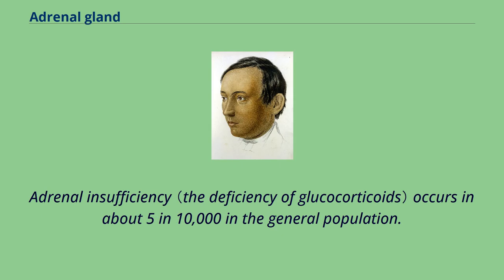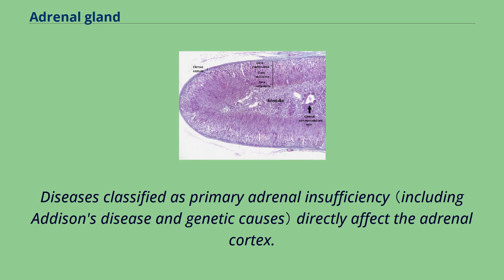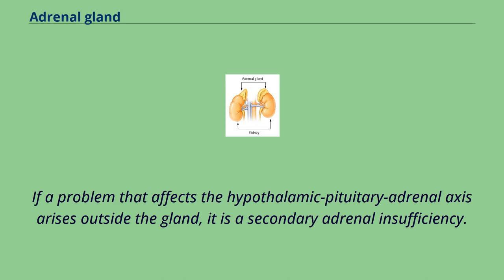Adrenal insufficiency occurs in about 5,000 to 10,000 in the general population. Diseases classified as primary adrenal insufficiency directly affect the adrenal cortex. If a problem that affects the hypothalamic-pituitary-adrenal axis arises outside the gland, it is a secondary adrenal insufficiency.